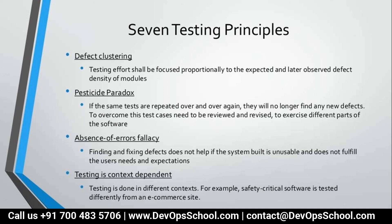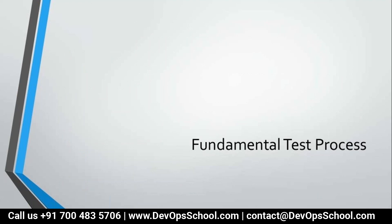Knowing these seven principles helps you as a manager. For example, if your test engineer is running the same test cases repeatedly without finding defects, you can apply the pesticide paradox principle and ask them to add more scenarios. Next, we will discuss the fundamental test process.